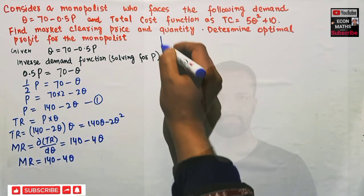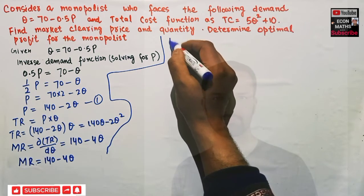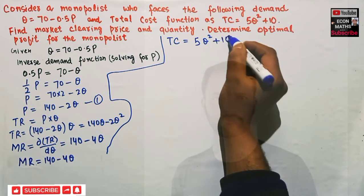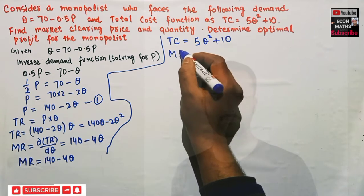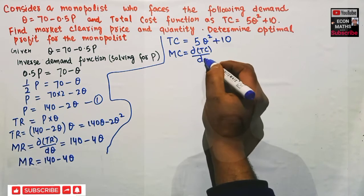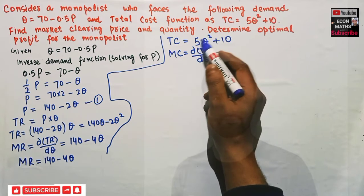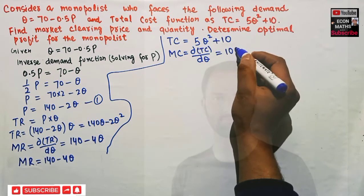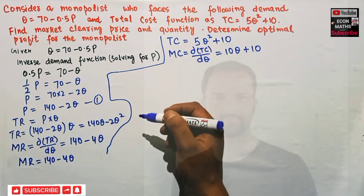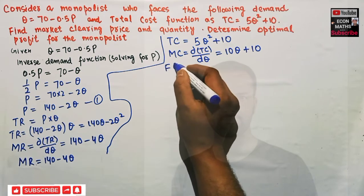After that, we need to find marginal cost. Our total cost is given as TC = 5Q² + 10. Marginal cost is the derivative of total cost with respect to quantity. Differentiating, the derivative of 5Q² is 10Q and the derivative of the constant 10 is zero, so MC = 10Q.